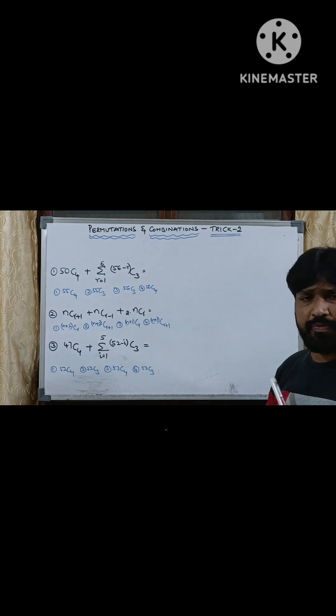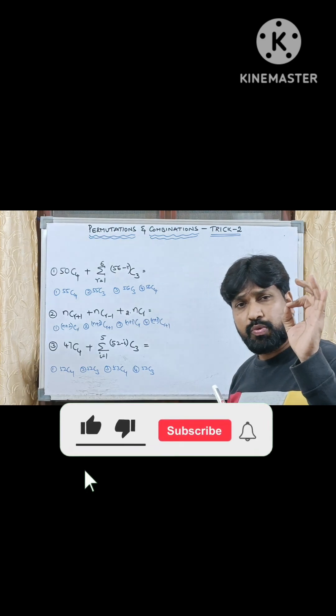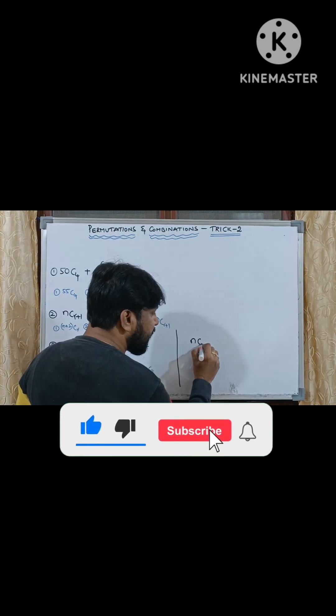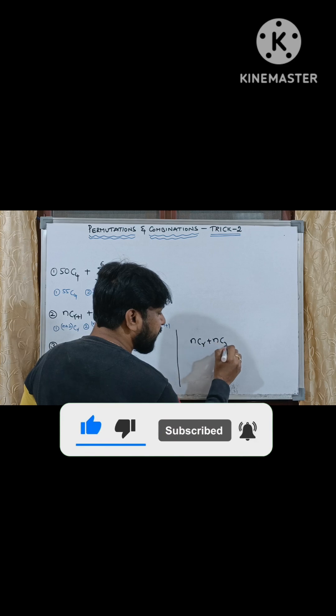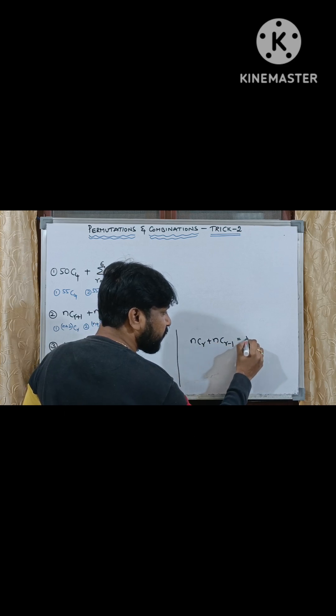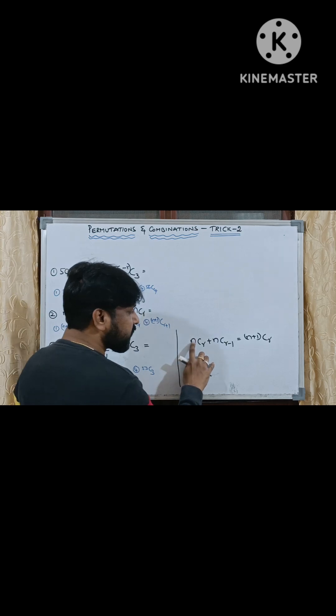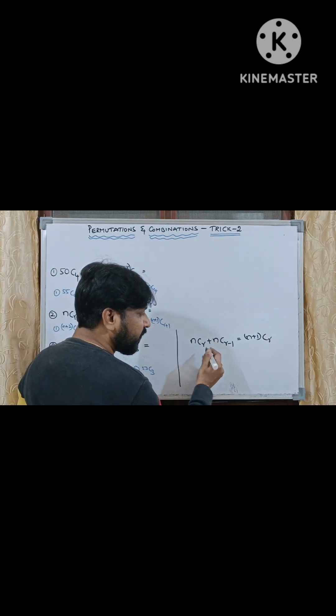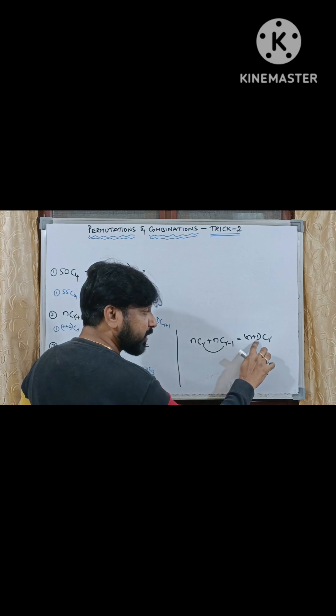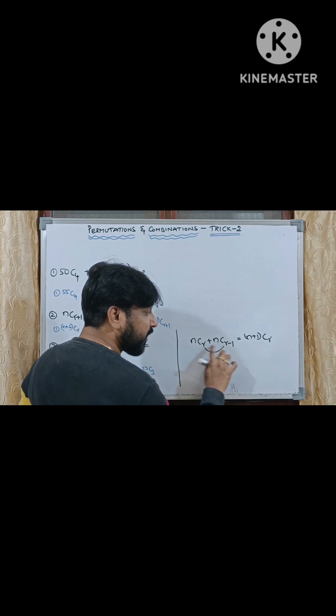First of all if you want to solve this kind of sums you have to know one formula, that is the NCR related formula. NCR plus NCR minus 1 is equals to N plus 1 CR. This is N, this is also N. The difference between these two must be 1. By that you can write N plus 1 C. From these two which is the bigger number? That number you are going to write.